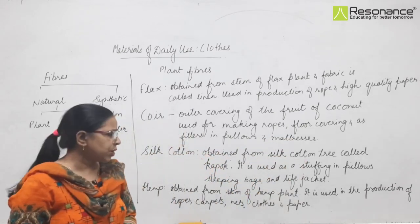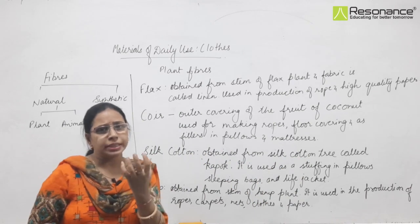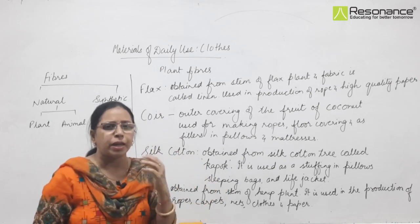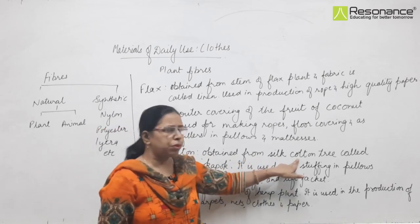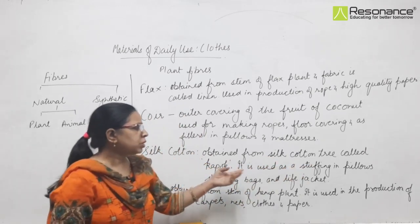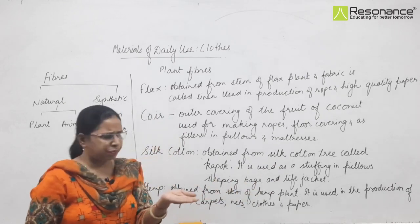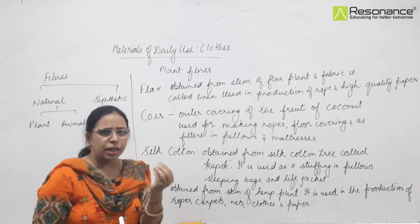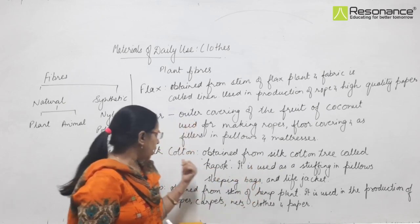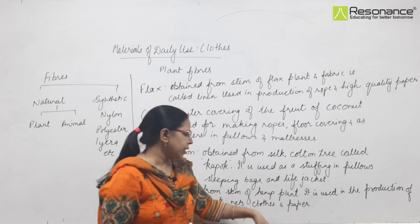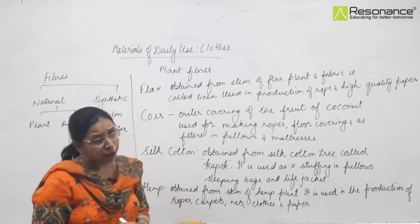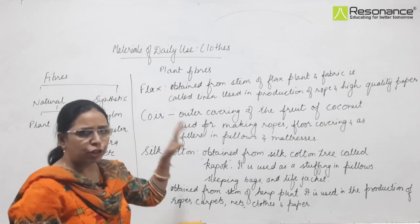Next is silk cotton, which is obtained from the silk cotton tree known as kapok. Kapok is a tree which actually bears fiber that is shining in nature. It resembles cotton in many ways, which is why it is named silk cotton - because silk generally refers to something shiny. Silk cotton, known as kapok, is used as stuffing in pillows and sleeping bags.